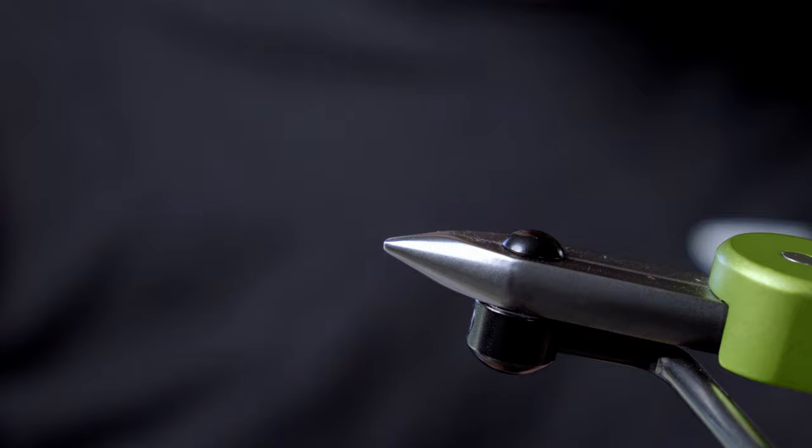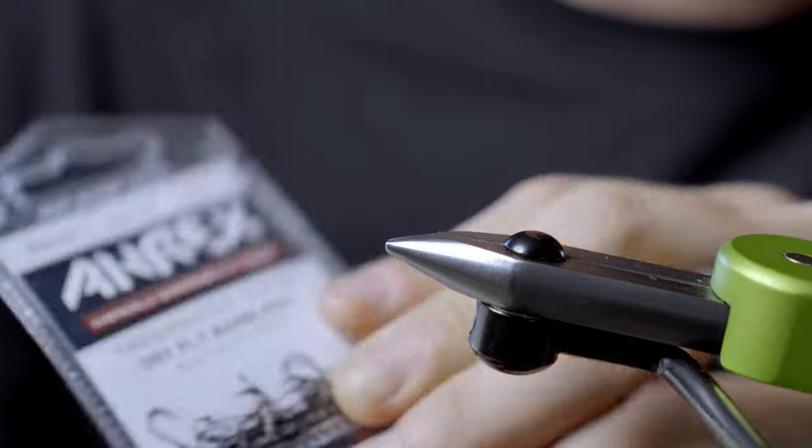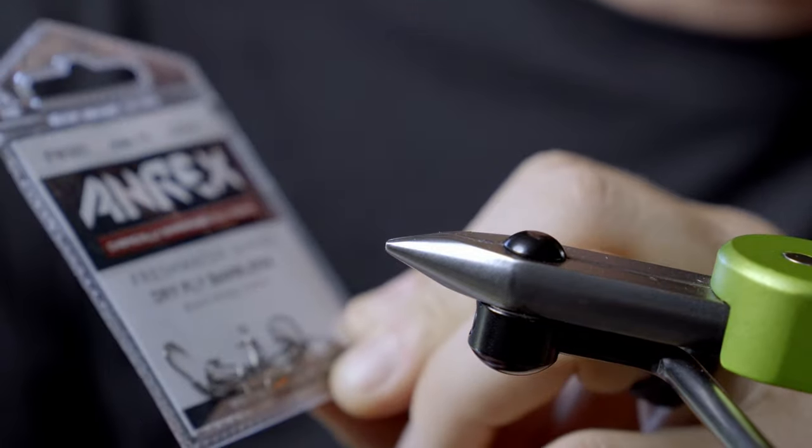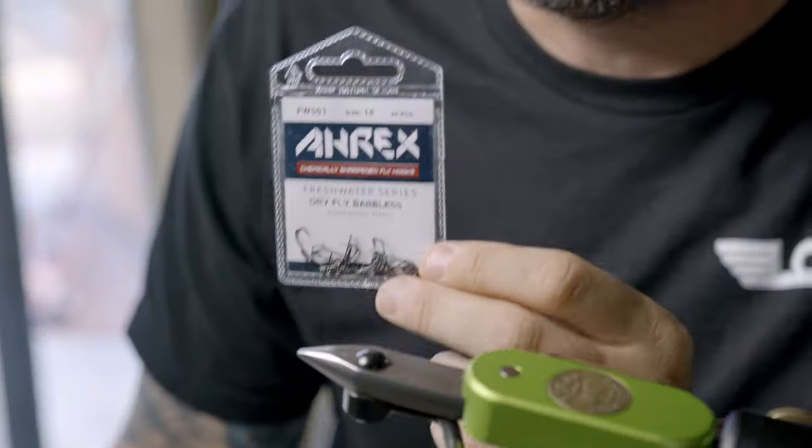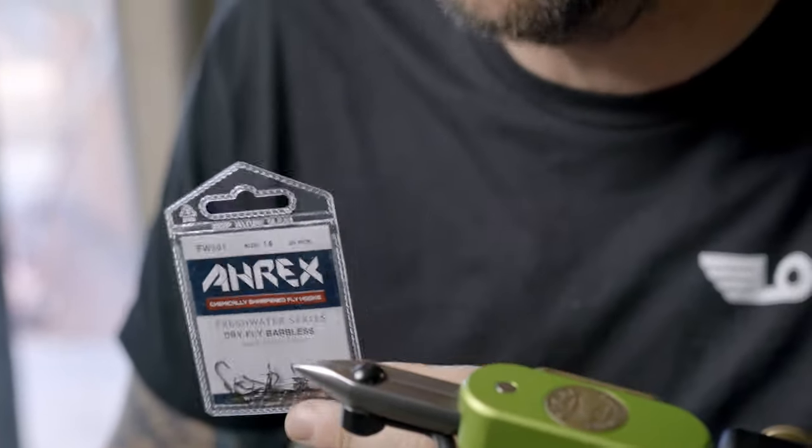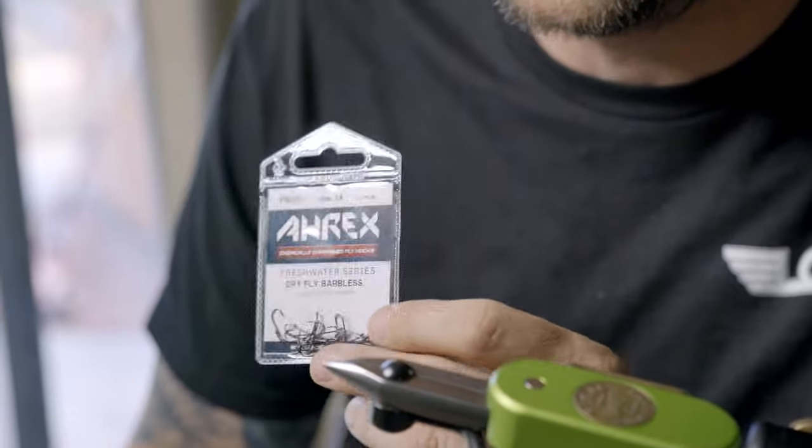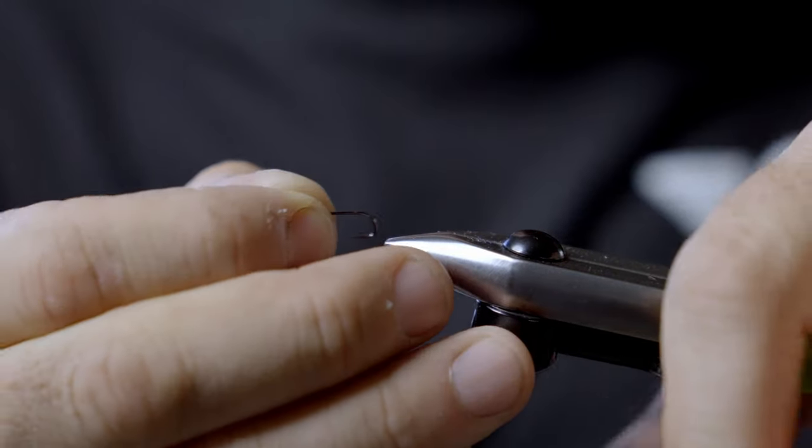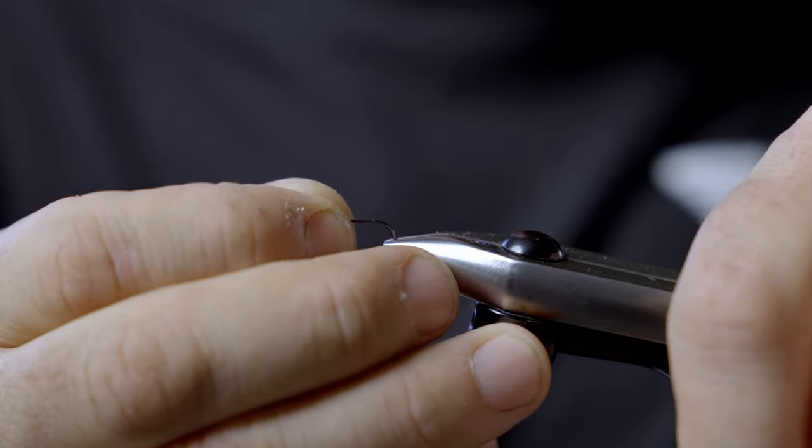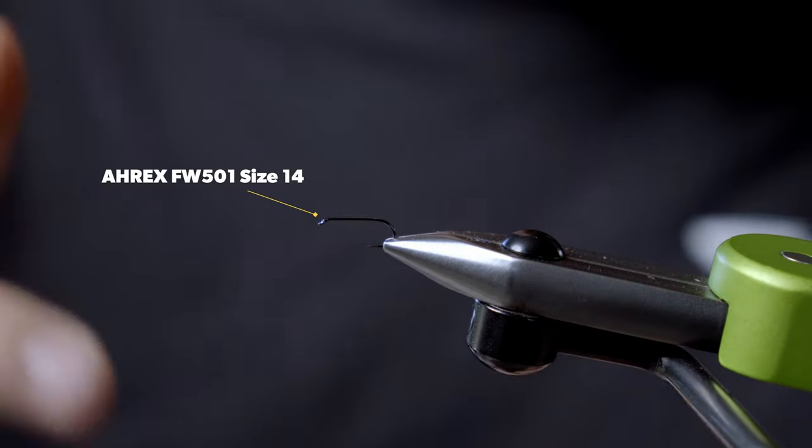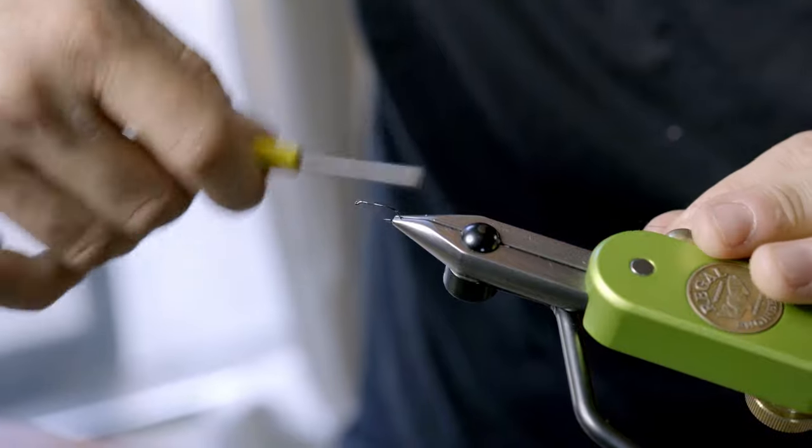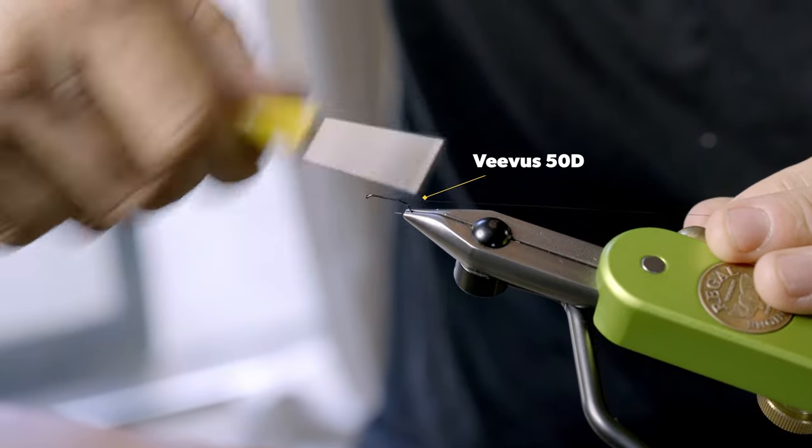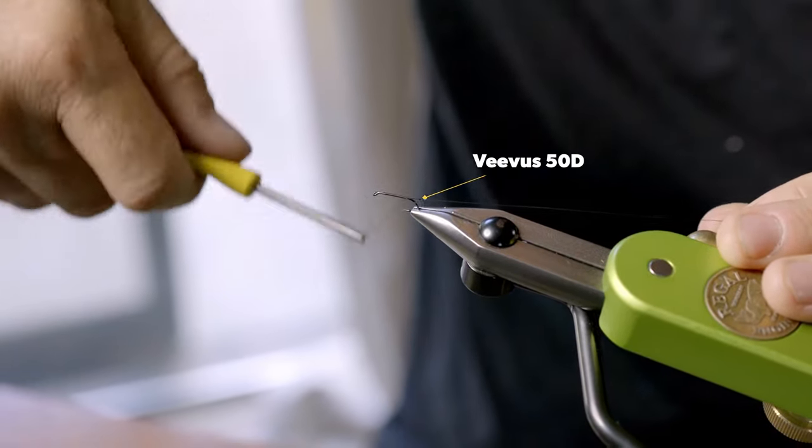First part of this fly is going to be the hook. I use for this one the Eric's FW-501, a basic dry fly hook. I fish it mainly in a 14, but you can go up to a 12 or a 16. I'm going to start with my 50D Vivas GSP and just work that thread down the hook shank to the back.